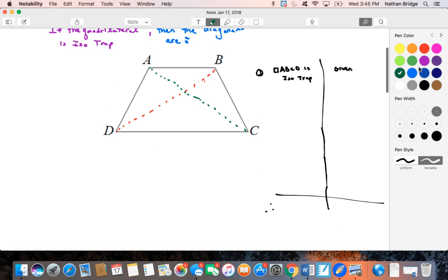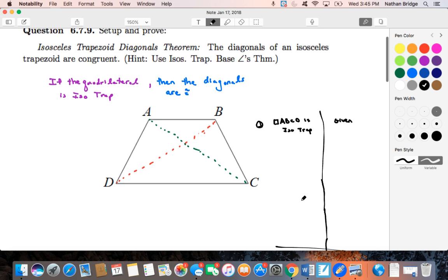So we're saying if A, B, C, D is an isosceles trapezoid, then the conclusion that we're trying to reach is that the diagonals, namely A, C, is congruent to B, D. That's what we're trying to get to at the end of this proof, and that's what we're going to go about doing.